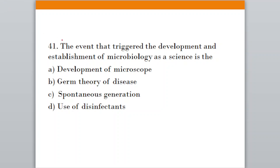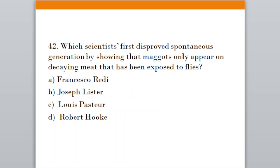Question number forty-one: The event that triggered the development and establishment of microbiology as a science is. Option A, Development of microscope; Option B, Germ theory of disease; Option C, Spontaneous generation; Option D, Use of disinfectants. The correct answer is option A, development of microscope. Question forty-two: The scientist who first disproved spontaneous generation by showing that maggots only appear on decaying meat exposed to flies was. Option A, Francisco Redi; Option B, Joseph Lister; Option C, Louis Pasteur; Option D, Robert Hooke. The correct answer is Francisco Redi, option A.